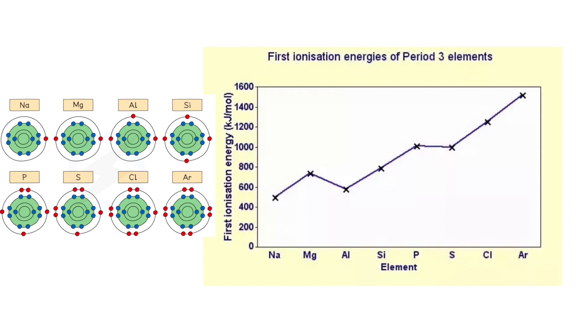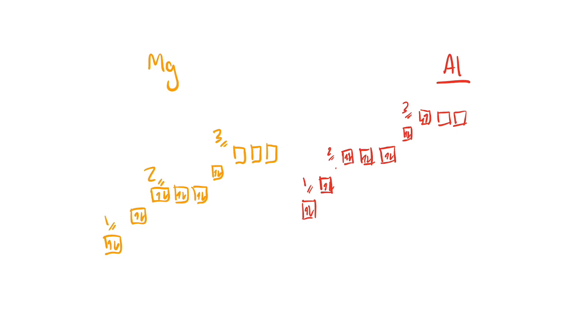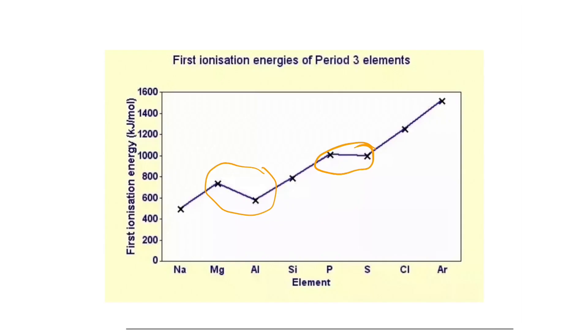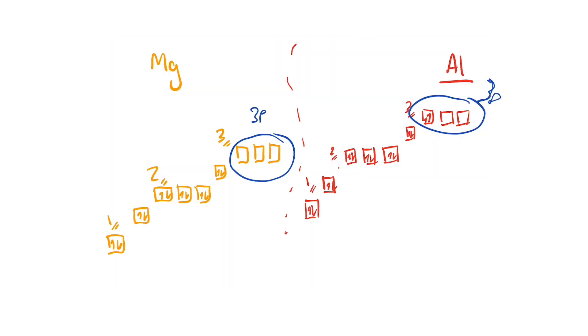Here we've got the first ionization energies of the period 3 elements. And whilst the trend is definitely a general increase across the period, there are two dips that I didn't mention before. Here's the first, and here's the second. Both of these can be explained through the magical powers of science. So first, let's have a look at magnesium and aluminium. Here we have the full electron configuration of both aluminium and magnesium in the respective colors. You can see there is nothing in the 3p orbital of magnesium, yet there is in the 3p orbital of aluminium. If we look at this dip, you can see it's between these two, and that is simply down to the fact that aluminium's furthest out electron is in the 3p suborbital. That is slightly further away from the nucleus than the 3s of magnesium. That distance makes more of a difference than the increased nuclear charge.